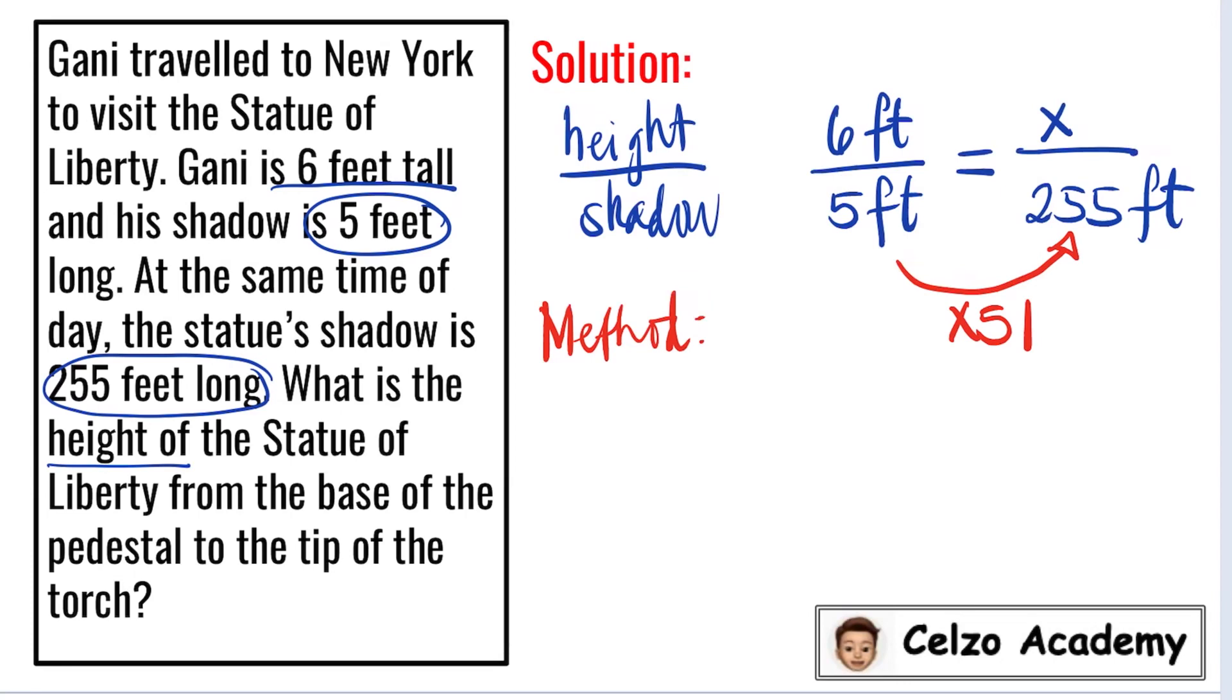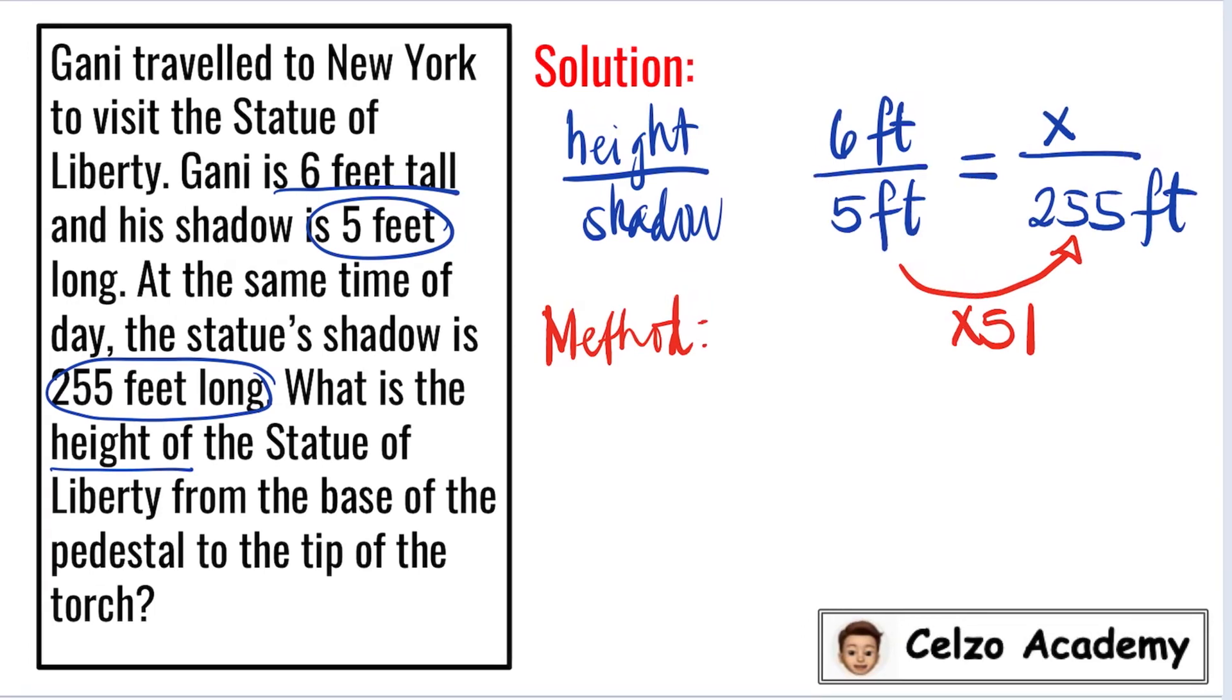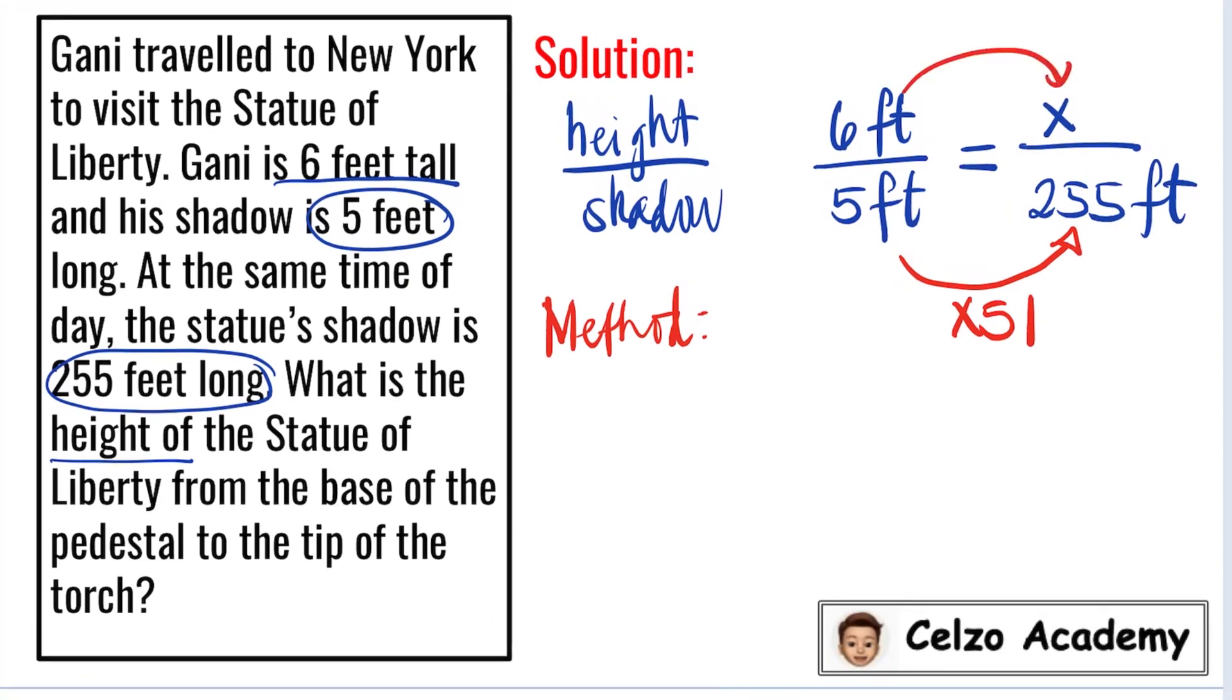So since for the denominator we multiply the first fraction by 51, the same thing should happen for the numerator. So this means we also need to multiply 6 by 51 to get the value of X. And 51 times 6 is 306. So this means that the height of the statue is 306 feet.